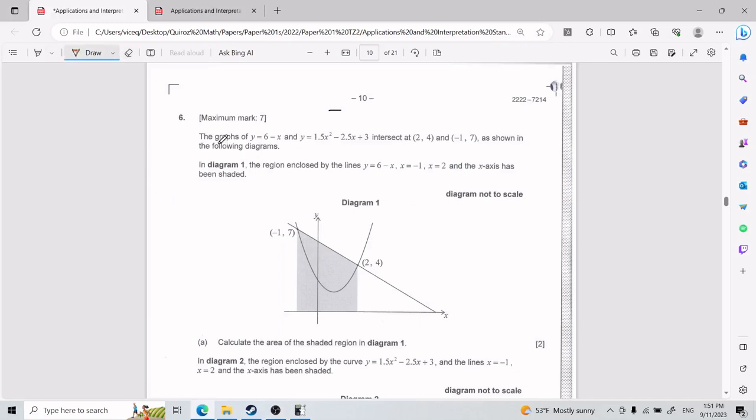Alright, so for number 6, we have that the graphs of y equals 6 minus x and y equals 1.5x squared minus 2.5x plus 3 intersect at (2, 4), which is here, and (-1, 7), which is here.